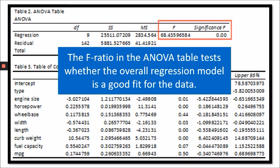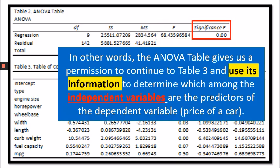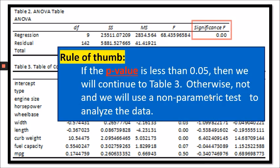Table 2 is the ANOVA table, and this information tests whether the overall regression model is a good fit for the data. In other words, the ANOVA table gives us permission to continue to Table 3 and use its information to determine which among the independent variables are the predictors of the dependent variable. As a rule of thumb: if the p-value is less than 0.05, we can continue to Table 3; otherwise we would use a non-parametric test. In this example, our p-value is less than 0.05, so we can proceed to Table 3.